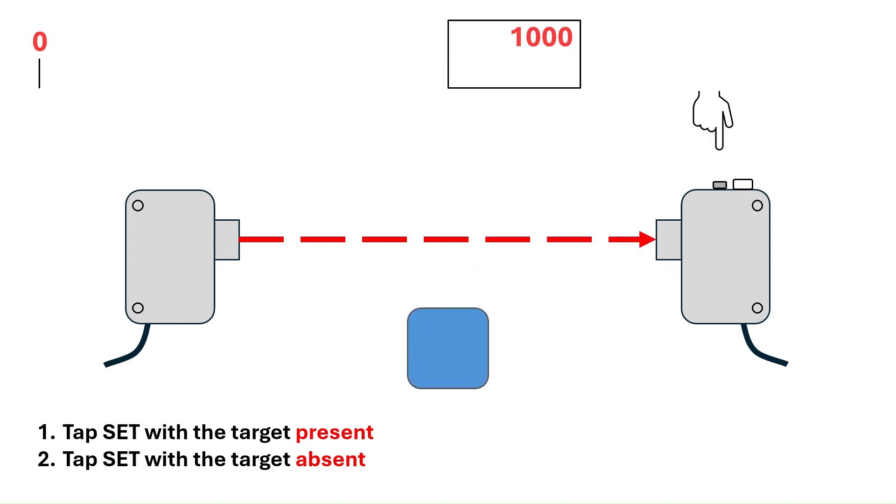Then, when the set button is pressed with the target absent, the live value is 1000. The sensor will set the set point to be right in the middle of these two values, which is 500.